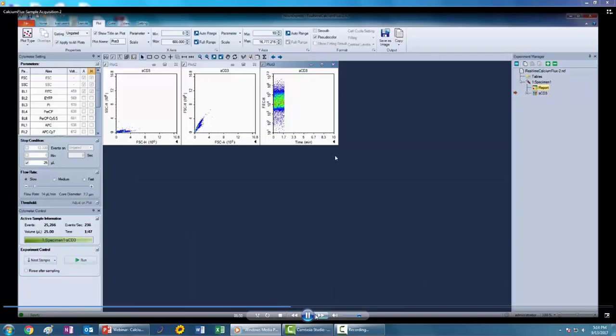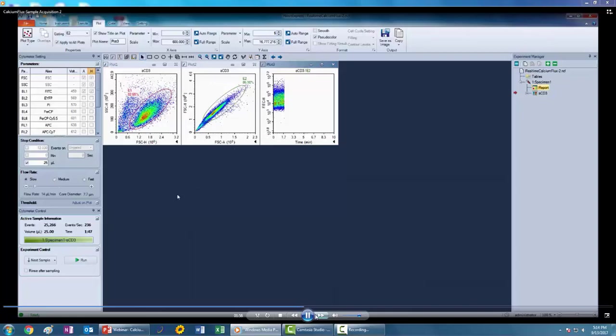After the baseline is acquired, you'll be appending data to the same sample after addition of a calcium stimulant to cause a calcium flux response. In this experiment I will be adding anti-CD3 antibody to cause a T cell receptor activation triggering calcium flux in my cells. First you need to change the acquisition stop condition to 125 microliters so that additional data can be acquired over time so that you can monitor the response.